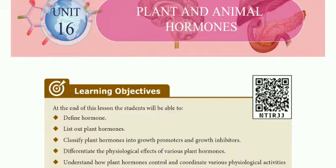You will classify plant hormones into growth promoters and growth inhibitors. Out of the five hormones, three are growth promoters and two are growth inhibitors. Growth promoters promote growth — they stimulate growth. Growth inhibitors inhibit or reduce growth.